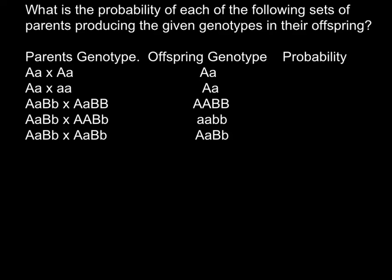Today's question is: what is the probability of each of the following sets of parents producing the given genotypes in their offspring? From the beginning this may look like a very complicated problem — we have a genotype for one parent and a genotype for the second parent, we cross them, and we have to find the probability of getting progeny with a particular genotype. After we solve the first problem it will be much easier to solve the remaining three. If you feel confident, pause the video, take a pen, try to solve all these problems, then resume and compare your answers with mine.